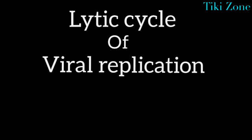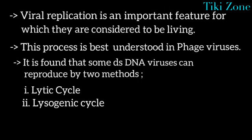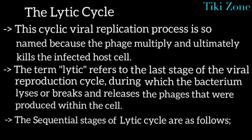In this video we are going to discuss the lytic cycle of viral replication. Viral replication is a process by which viruses multiply their number inside the host cell — an important feature for which viruses are considered to be living. This process is best understood in phage viruses. Some double-stranded DNA viruses can reproduce by two methods: the lytic cycle and the lysogenic cycle. Here we will focus on the lytic cycle.